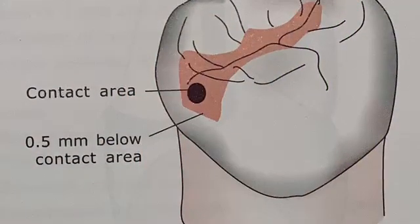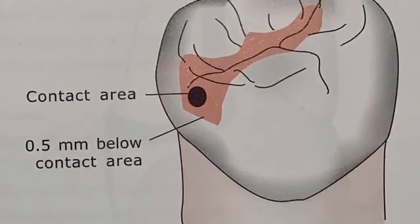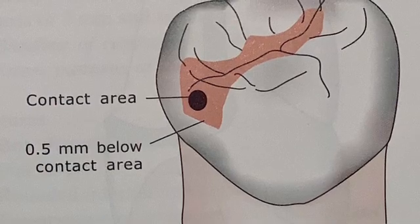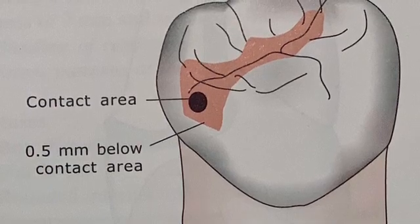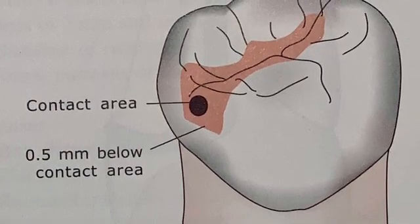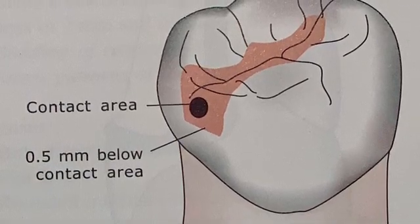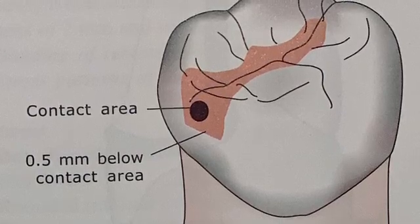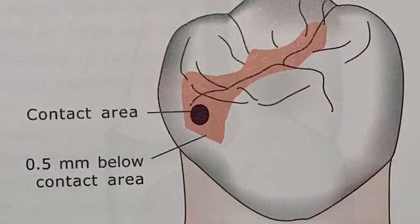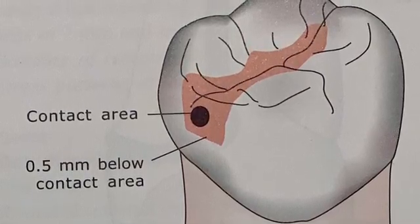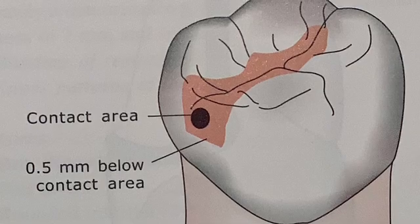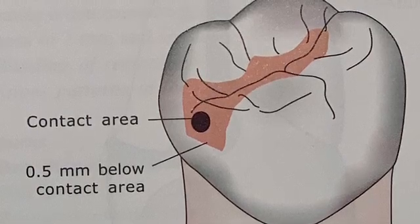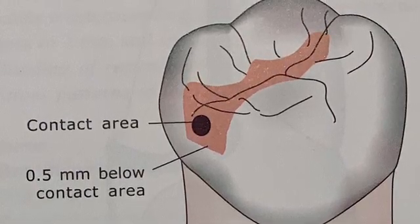At this stage you must be knowing very well that class 2 cavities are those which are present on the proximal surfaces of the posterior teeth. Now this is an outline form for a distal occlusal cavity on a molar. Our first step is going to be to draw an outline form on the teeth.